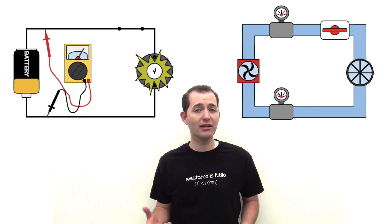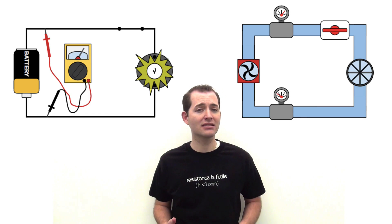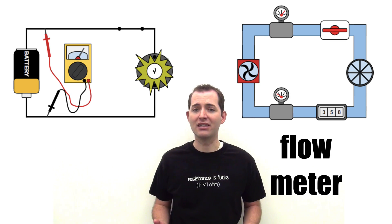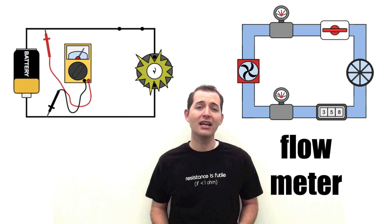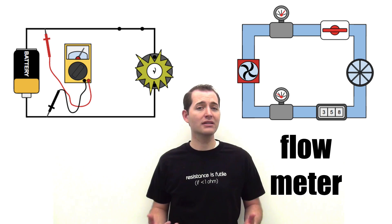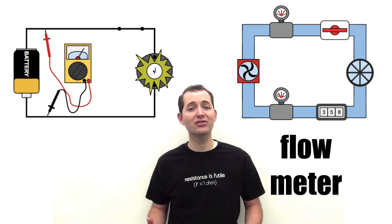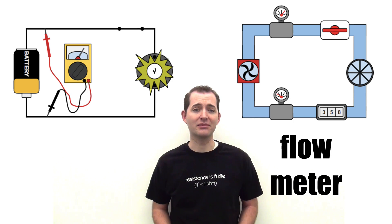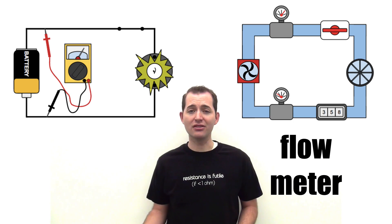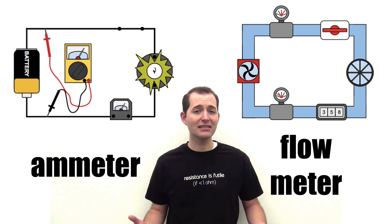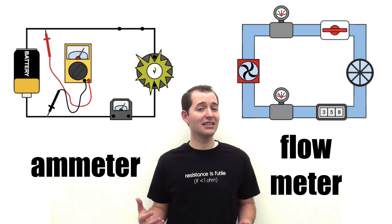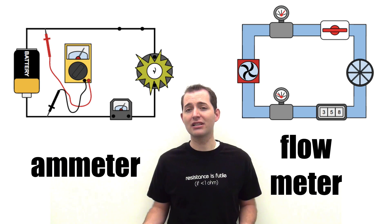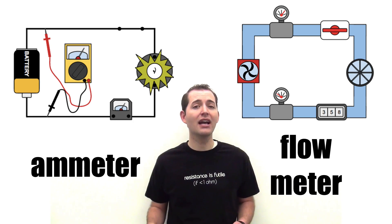In a water system, we can also measure how much water is flowing past a certain point using what's called a flow meter. This measures how much water is moving past that point in a certain amount of time, expressed in gallons per minute or liters per minute. We have a similar way of measuring the flow of current in our electrical circuit using a device known as an ammeter. This measures how many amps or amperes are flowing through our system — essentially how many electrons or protons are flowing through our wire every second.